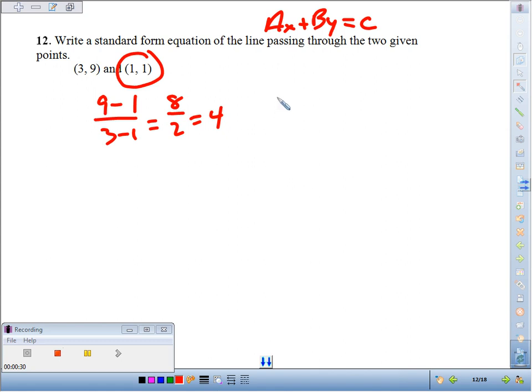Let's say you use the point 1, 1. Y minus the Y coordinate equals slope times X minus the X coordinate.